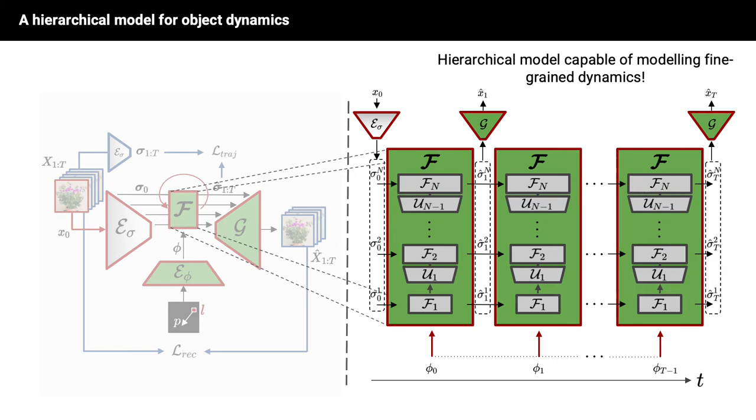Let's take a closer look at F, which we choose to be a hierarchical RNN, consisting of n individual RNNs operating at the different spatial levels of sigma. Each RNN predicts its next state based on the current state and the up-sampled prediction of the RNN at the spatial level below. With this architecture, we can model fine-grained object dynamics.